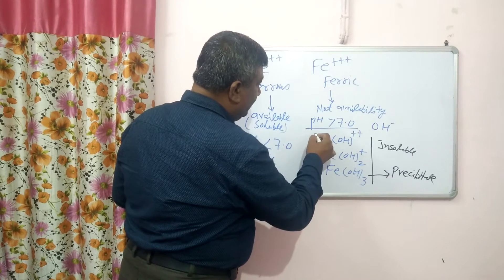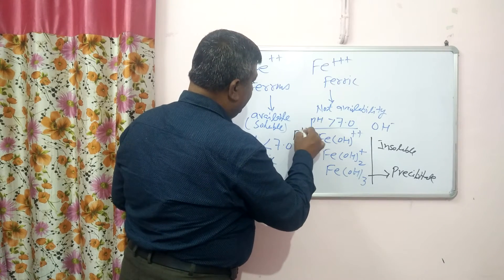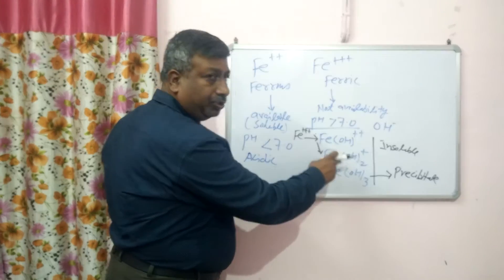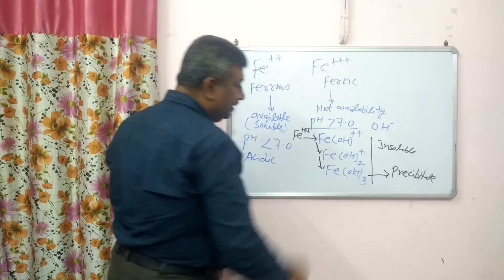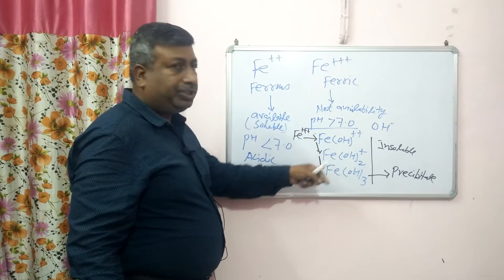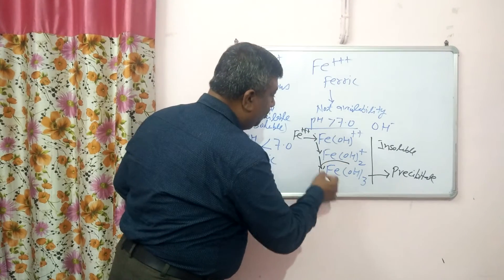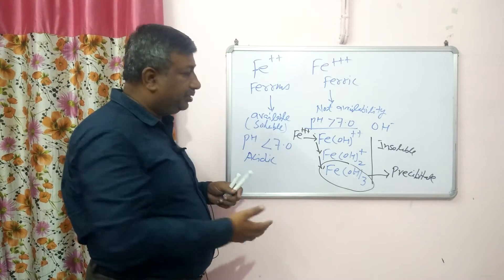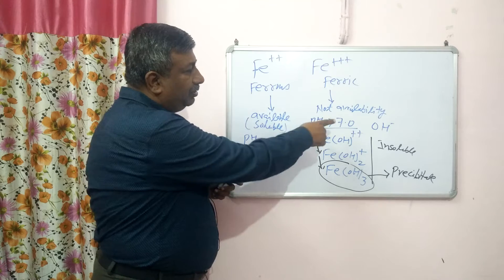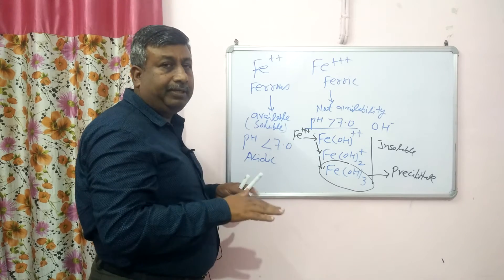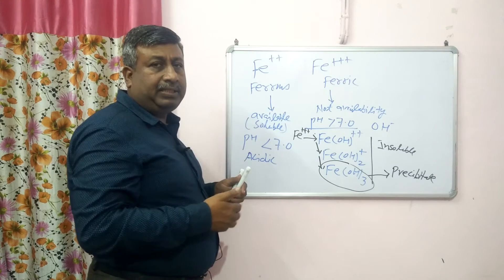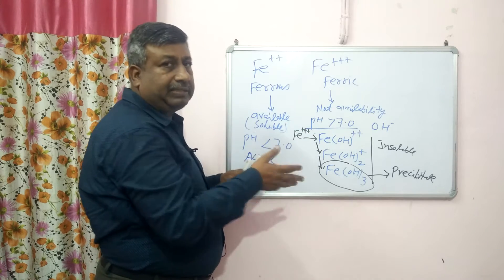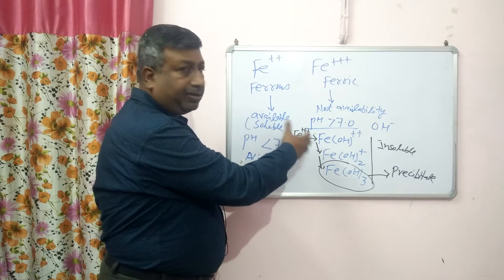As pH is increased, ferric is converted into hydroxide forms. With further pH increase, it converts to Fe(OH)₃, which is the insoluble form, so solubility is reduced. At high pH, ferric hydroxide forms because hydroxyl ions are present and this ferric hydroxide precipitates. As pH increases, hydroxyl ion concentration increases and ferric hydroxide is formed.